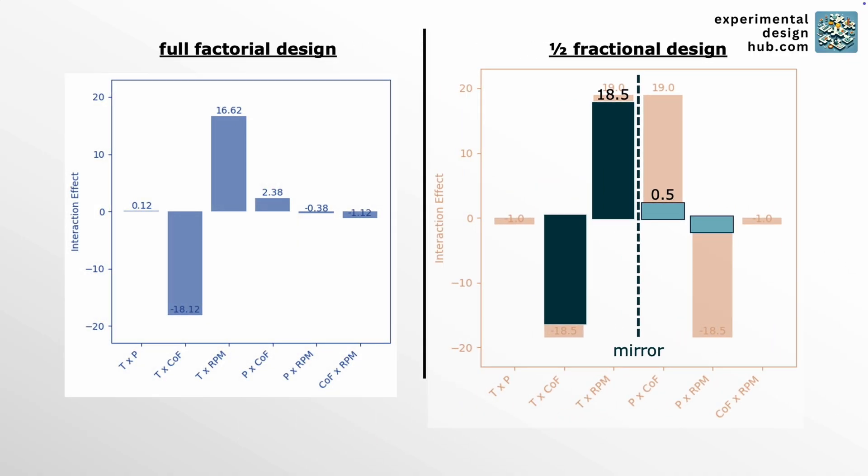And ta-da! Looking at the full factorial design results confirms it. All interactions involving pressure are small, and only the temperature-concentration and temperature-RPM interactions are the important ones. Just like that, we've handled aliasing — saving us 50% of time in the lab. And if at any point the results are ambiguous and you're unsure which interaction is significant, just run the missing fraction. You won't have saved much time, but at least you also haven't wasted any.